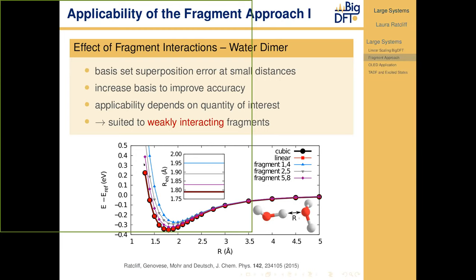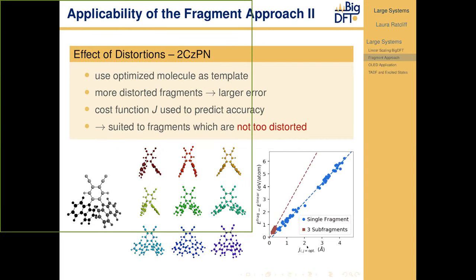In general we should use the fragment approach when we have a system with weakly interacting fragments. The second thing to consider is the effect of distortions: for the molecule 2CZPN — used in organic LEDs — we can use the optimized gas phase molecule as a template. But if we use a more realistic structure generated using finite temperature molecular dynamics, the molecule tends to have sub-fragments that rotate and show distortion. The more distorted the fragment, the larger the error.